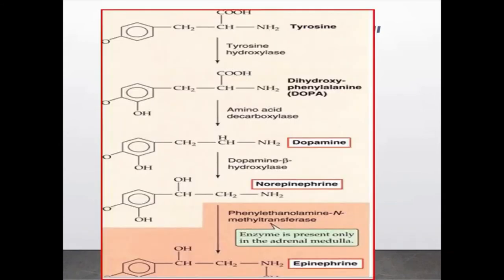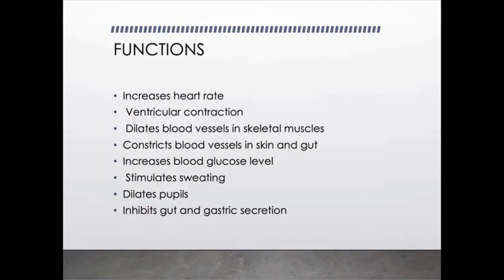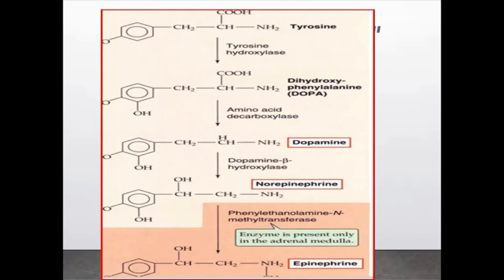The synthesis of epinephrine, norepinephrine, and dopamine starts from tyrosine. Due to the effect of tyrosine hydroxylase enzyme it is converted into DOPA, which is converted into dopamine. Through the enzyme dopamine beta-hydroxylase it is converted into norepinephrine. To convert it into epinephrine, it requires the enzyme phenylethanolamine-N-methyltransferase, which is only present in the adrenal medulla.